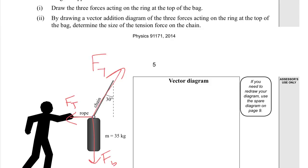Part 2 is drawing a vector addition diagram with three forces to determine the size of the tension force on the chain. So the tension force should be equal and opposite to the other two added together, so we can construct our diagram like that.